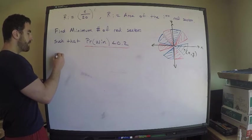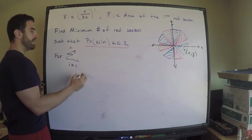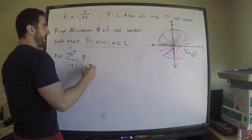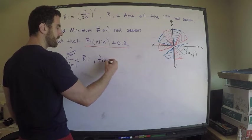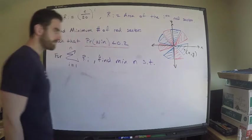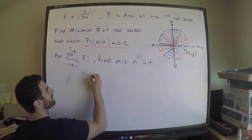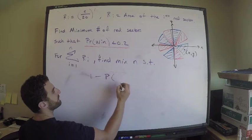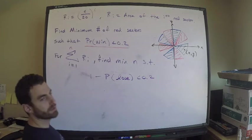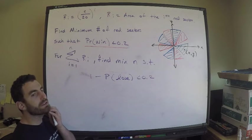Equivalently, let me rephrase the question. I want the minimum number of red sectors. For all of my red sectors, i equals 1 to n, I want to find the minimum n such that one minus the probability that I lose is less than 0.2.